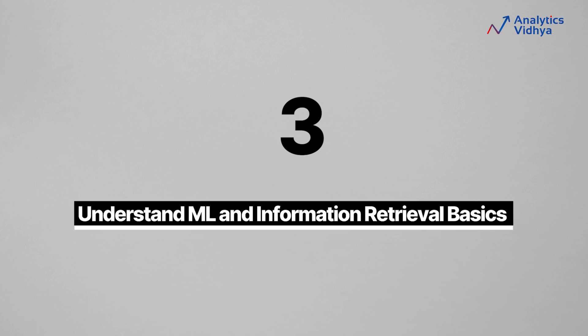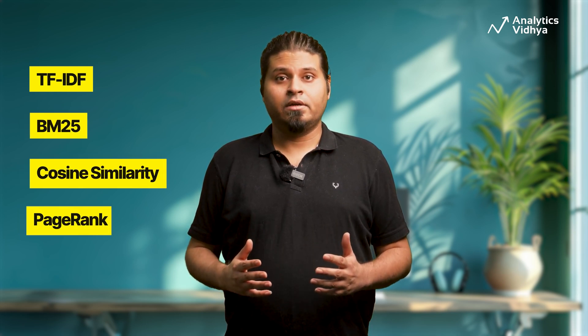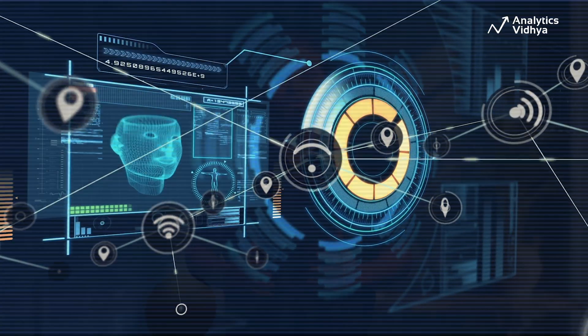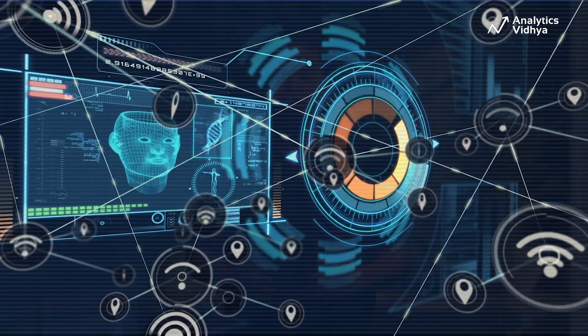Step 3: Understand machine learning and information retrieval basics. A foundation of machine learning principles is critical for developing RAG systems. Learn about supervised and unsupervised learning to handle labeled and unlabeled data. Dive into clustering techniques like K-means and hierarchical clustering for organizing data. Explore information retrieval concepts including vector space models like TF-IDF, BM25, cosine similarity, and PageRank for ranking document relevance. Understanding these algorithms enables you to design effective and efficient retrieval systems that serve as the backbone of RAG systems.